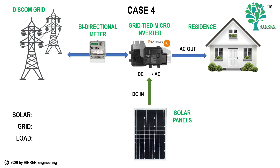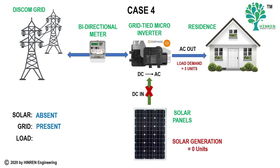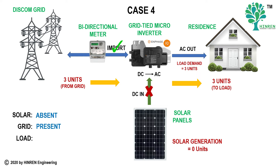In Case 4, there is a demand of about 3 units and the grid is available, however there is no solar — that is, it is night time. In this scenario, the entire load demand of 3 units is catered exclusively by the power utility or DISCOM grid. So obviously, there is only import of energy and no export. The amount you can draw is up to your sanctioned capacity, which is the sanction load fixed by the DISCOM.